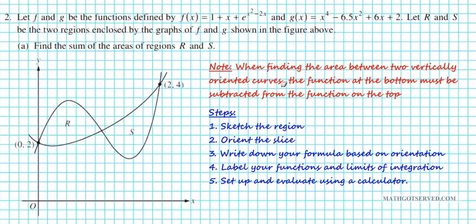One thing you want to note when finding the area between two vertically oriented curves: as you can see here, they're oriented vertically when we're slicing them to find the area. The function on the bottom must be subtracted from the function on the top. Keep that in mind.